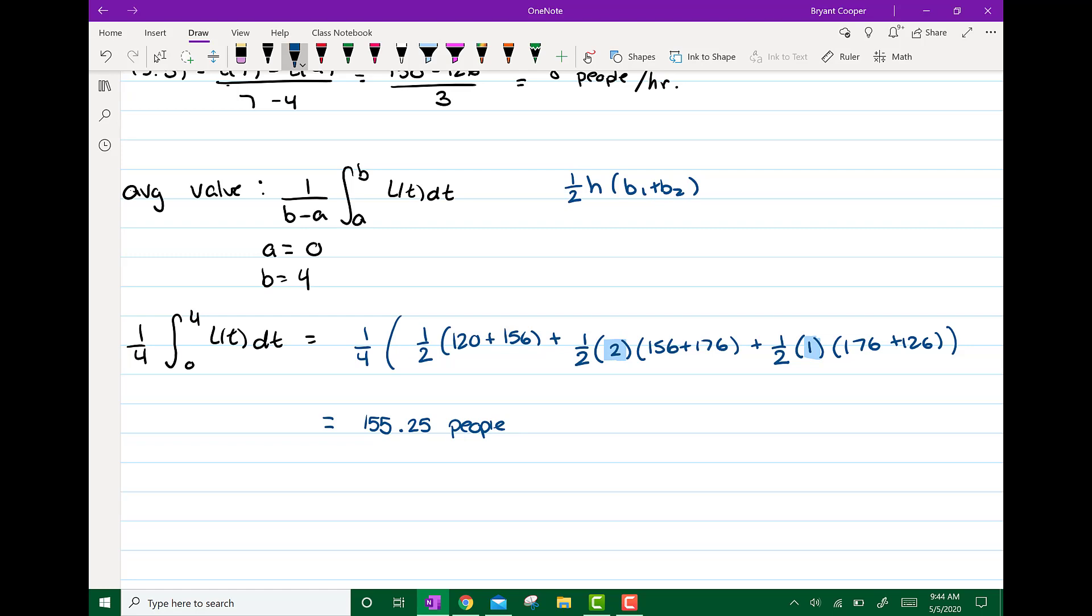So then you put that all in your handy dandy calculator and you get 155.25 people. You would have been okay if you rounded this to 155 or 156 people.